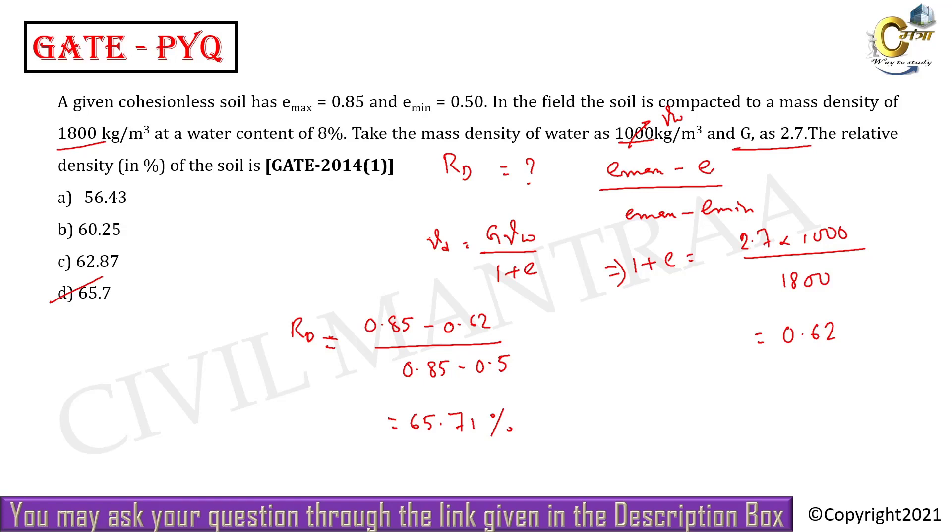You can find out e natural. This e means the e natural. And you can find out gamma d equal to G into gamma w by 1 plus e, and then you can apply the formula.